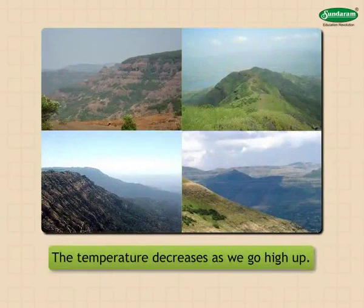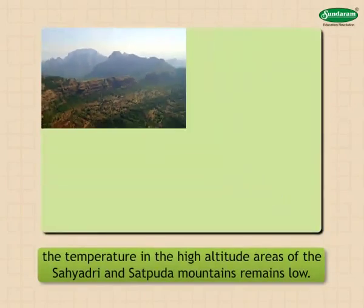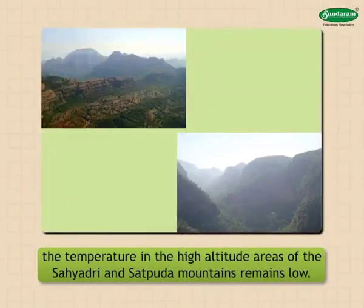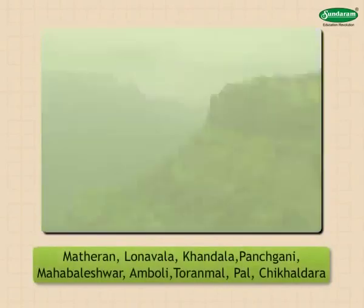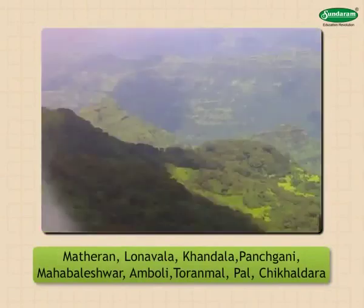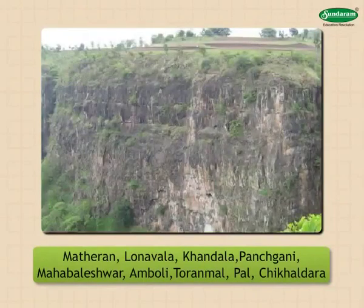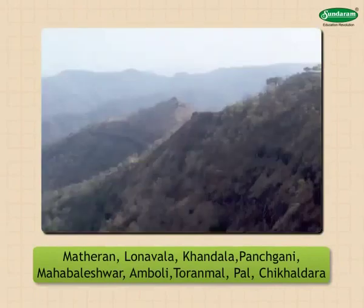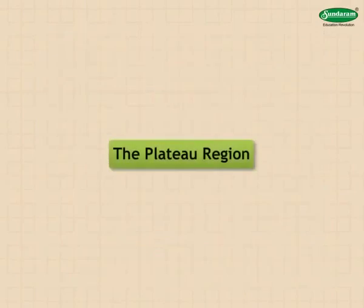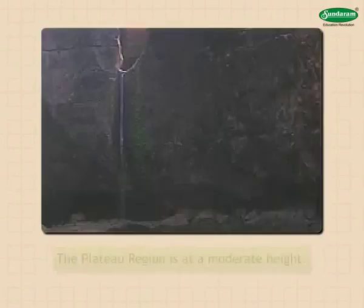The mountainous region: the temperature decreases as we go up; therefore, the temperature in the high-altitude areas of the Sahyadri and Satpura mountains remains low. That is why there are hill stations in these high-altitude areas. The hill stations Matheran, Lonavala, Khandala, Panchgani, Mahabaleshwar, and Amboli are in the Sahyadri ranges, while Toranmal, Palghar, and Chikhaldara are situated in the Satpura mountains.